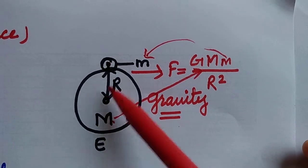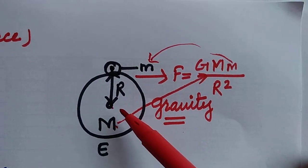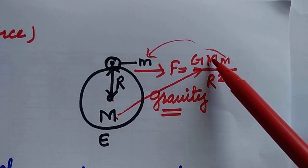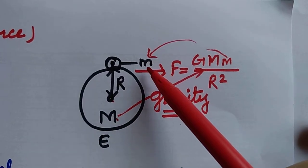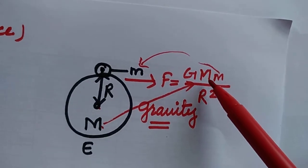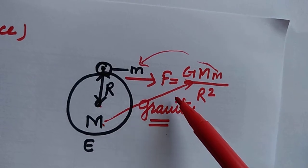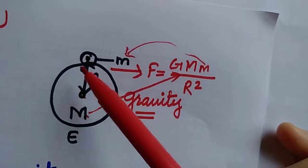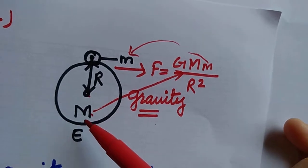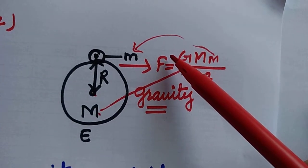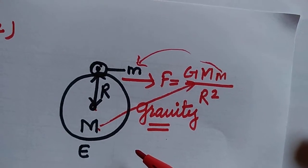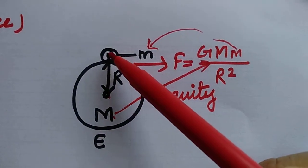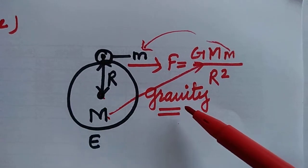The distance between the two objects is taken as the radius of the earth, that is why the distance is denoted r. So the formula becomes F = G·M·m / r², which is Newton's Universal Law of Gravitation. This gravitational force, in the particular case where one of the objects is the earth, is called gravity. Gravity is the force with which the earth attracts any object towards its center.